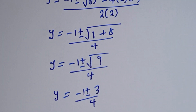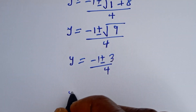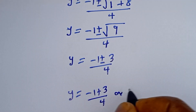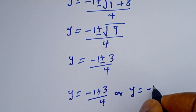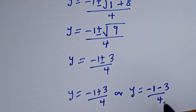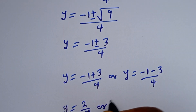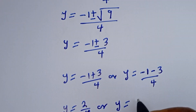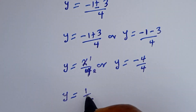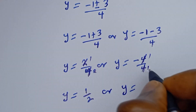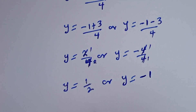Then y is equal to minus 1 plus or minus square root of 9, which is 3, over 4. Therefore y is equal to minus 1 plus 3 over 4, or y is equal to minus 1 minus 3 over 4. From the first case, y equals 2 over 4, which is 1 over 2. From the second case, y equals minus 4 over 4, which is minus 1.